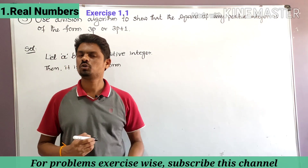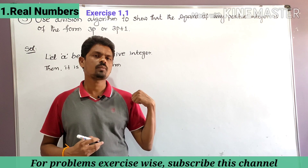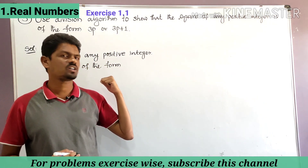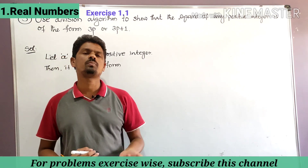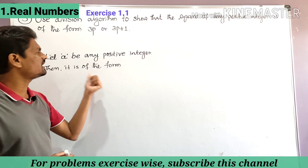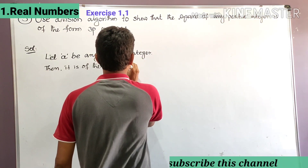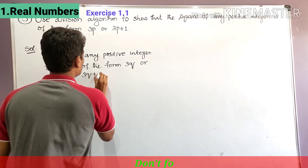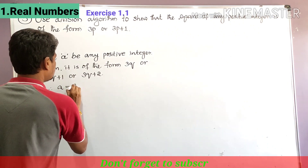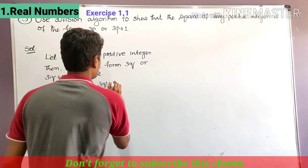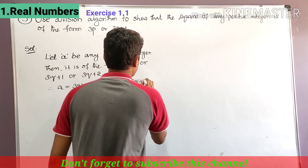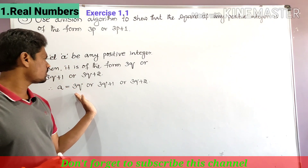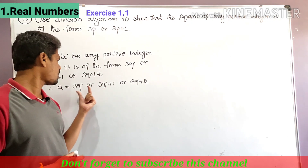Let small a be any positive integer. Then a may be either 3q, or 3q plus 1, or 3q plus 2. So any positive integer is of the form 3q, 3q plus 1, or 3q plus 2 — that you have to remember. Here we have three forms for a.